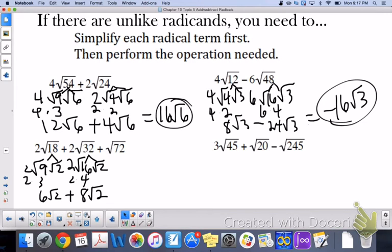So we have 6 root 2 plus 8 root 2. And then 72 is 36 times 2. So that is 6 root 2. So now we can combine. 6 plus 8 is 14. 14 plus 6 is 20 root 2.